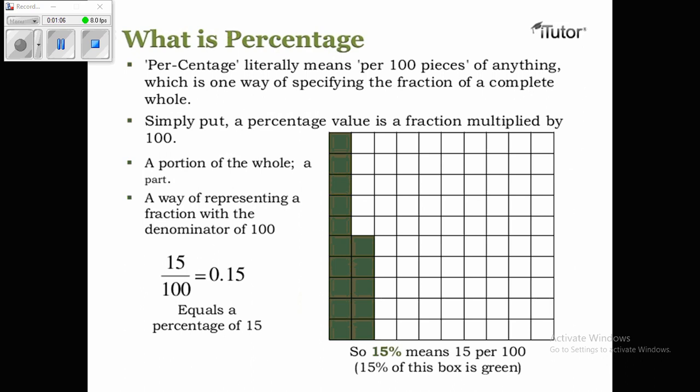What is percentage? Percentage literally means 'per cent' — per hundred pieces of anything — which is one way of specifying the fraction of a complete whole. Simply put, a percentage value is a fraction multiplied by one hundred: a portion of the whole, a way of representing a fraction with the denominator of one hundred.